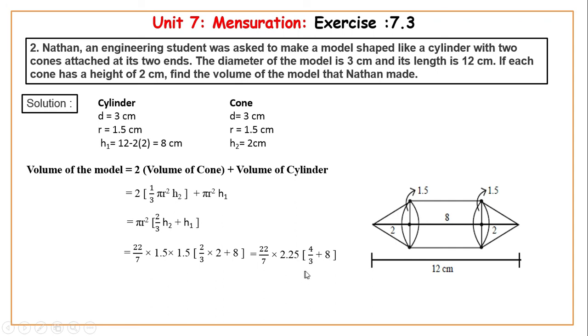The answer is 24 plus 4, which is 28. Further simplification is 22 by 7 into 2.25 into 4 plus 24 divided by 3. The remaining answer is 28 divided by 3. So the answer is 22 by 7 into 2.25 into 28 divided by 3.